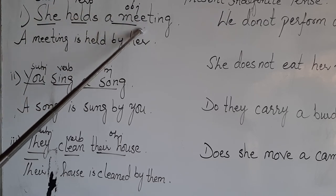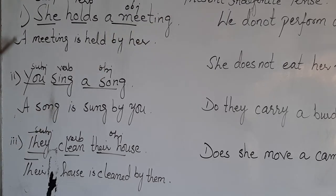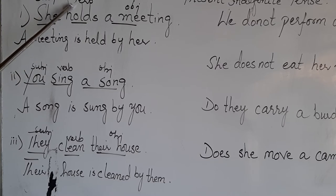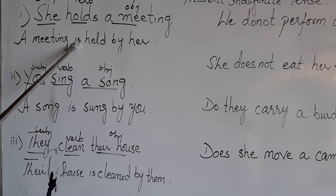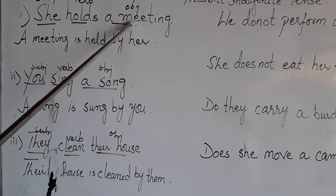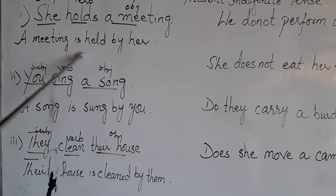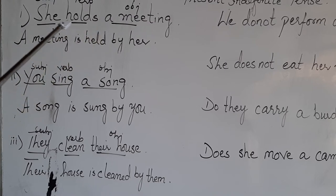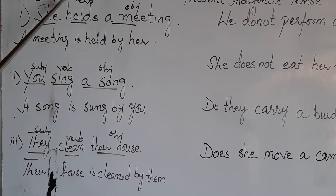She holds a meeting - 'a meeting' is singular, so we use 'is'. The third form of 'hold' is 'held'. So the passive voice becomes 'a meeting is held'. After the use of 'by', the subject 'she' is changed into 'her'. 'He' is changed into 'him', 'they' into 'them', and 'you' stays as 'you'. With singular you use 'is', with plural you use 'are'.